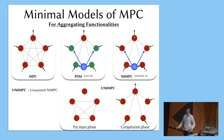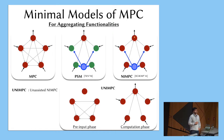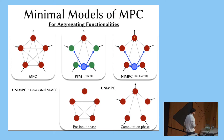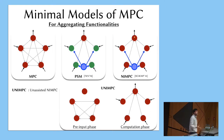What we introduce is a new model called UNIMPC — unassisted NIMPC. It's like NIMPC, but we don't have the coordinator, and the output party is not allowed to learn the residual function. So it's just like an MPC protocol. But we do allow a two-phase computation: a first phase before the inputs come in where the input players can talk to each other, and then a phase when the inputs come in where they send a single message to the output player.